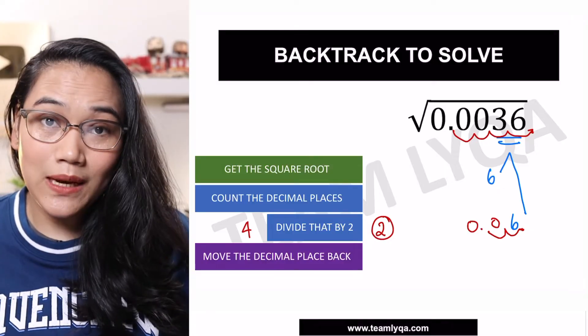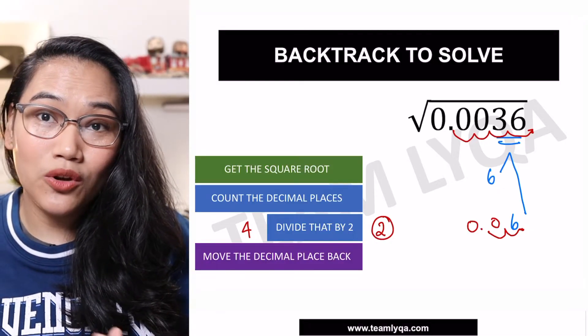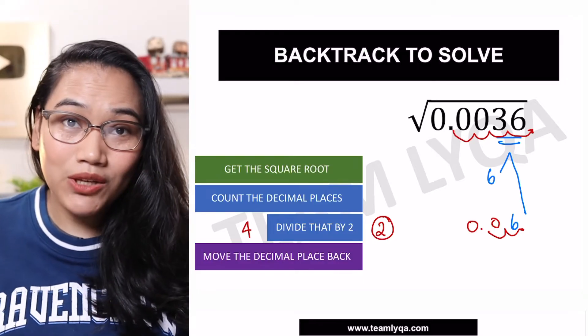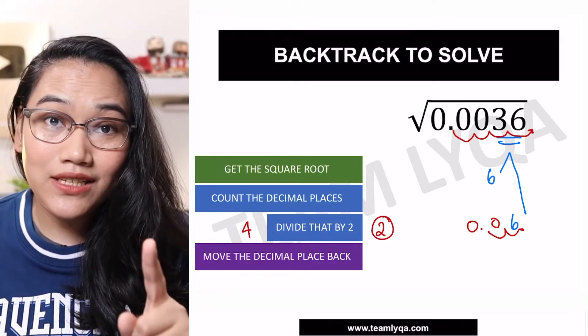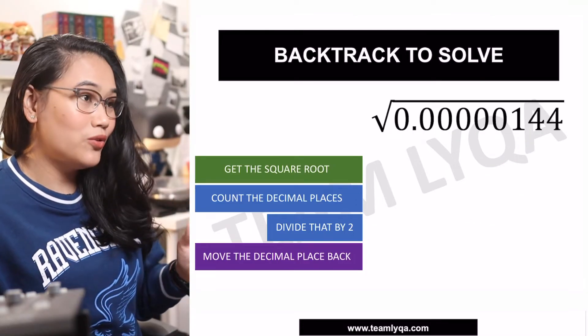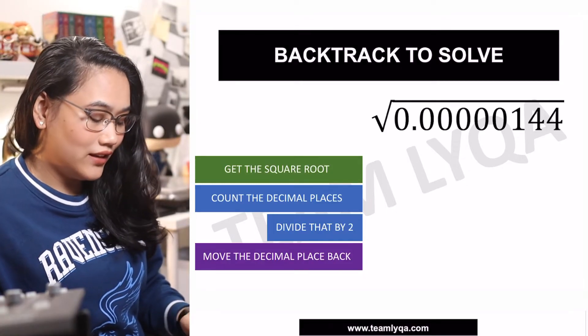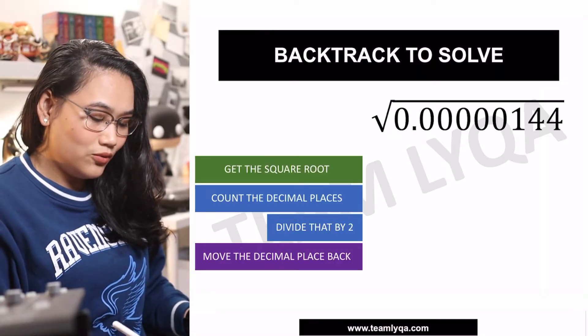Now, if we look back at our solution earlier, you'll notice that's really the two numbers we multiplied to get 0.0036. This is the same sequence of steps that you're going to do when it comes to getting the square root of decimals, no matter how many zeros there are.